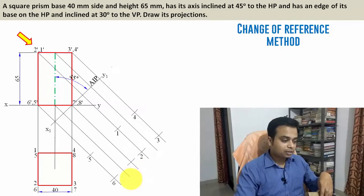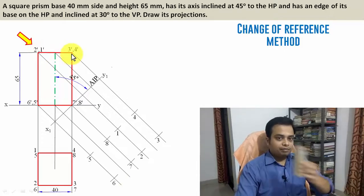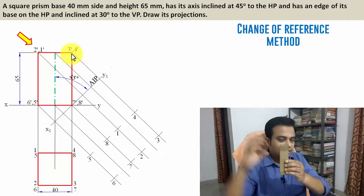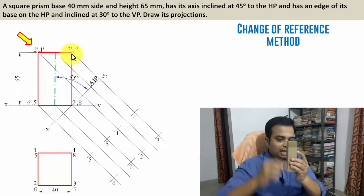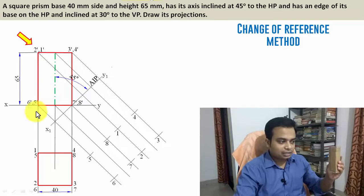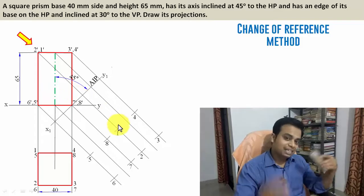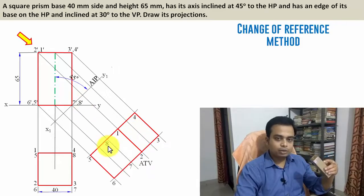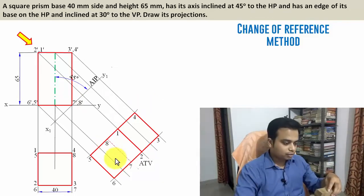Repeat this same step six more times to locate all eight points. Now, looking from the front this appears as a line, but on the auxiliary inclined plane the square face 1-2-3-4 is visible to us, and the rectangular face 1-2-6-5 is also directly visible. These two surfaces are drawn as visible. The edge 7 dash–8 dash is not visible to us, so it is given a hidden line.